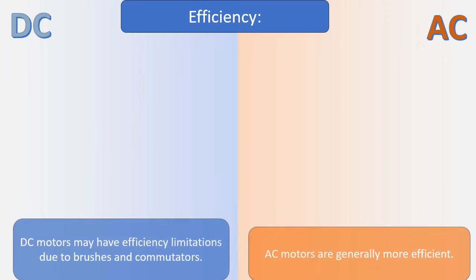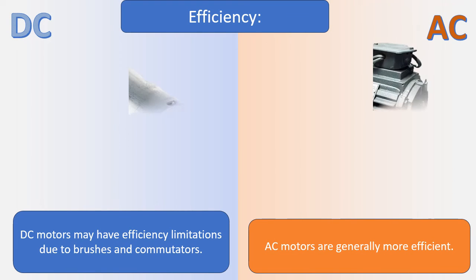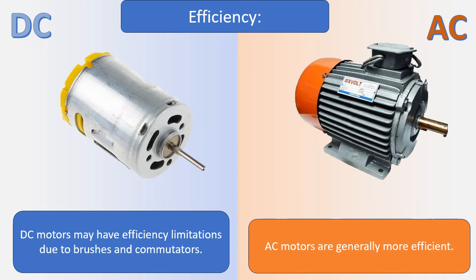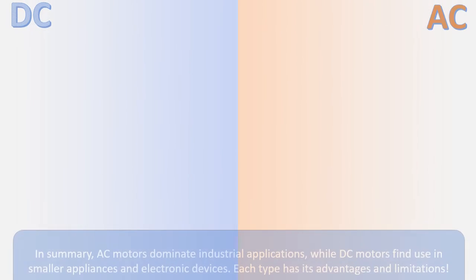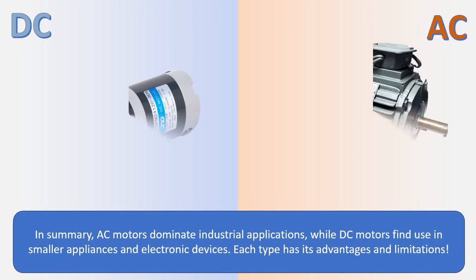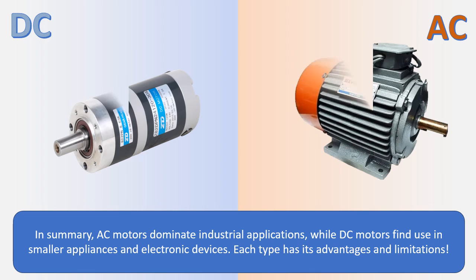Efficiency: AC motors are generally more efficient, while DC motors may have efficiency limitations due to brushes and commutators. In summary, AC motors dominate industrial applications, while DC motors find use in smaller appliances and electronic devices. Each type has its advantages and limitations.